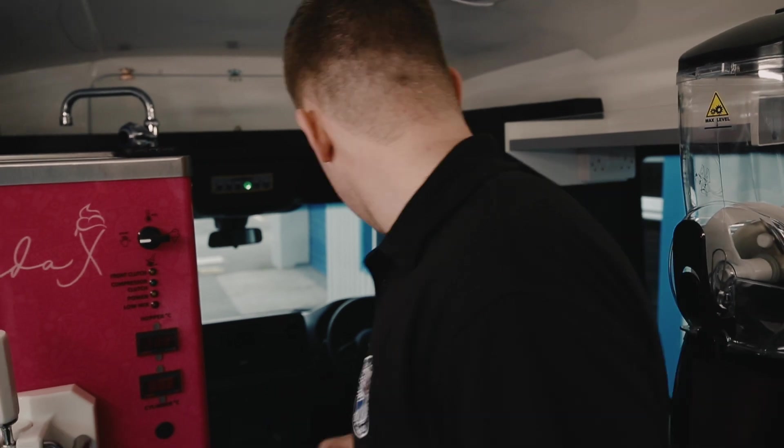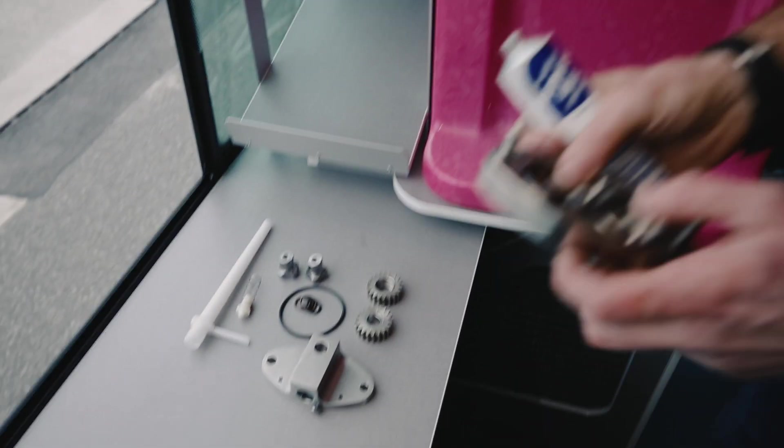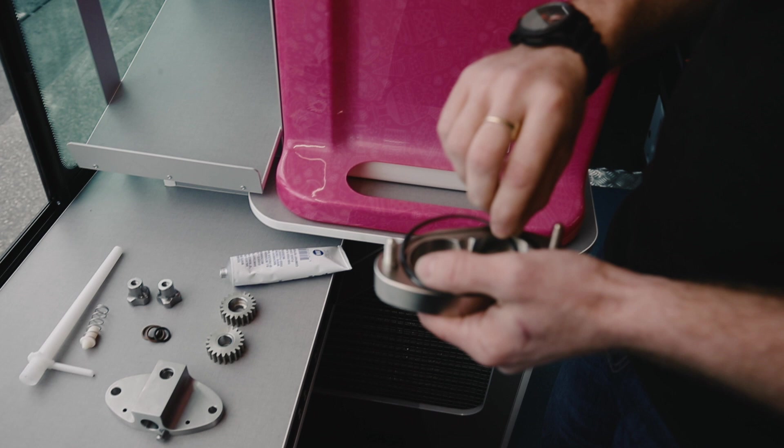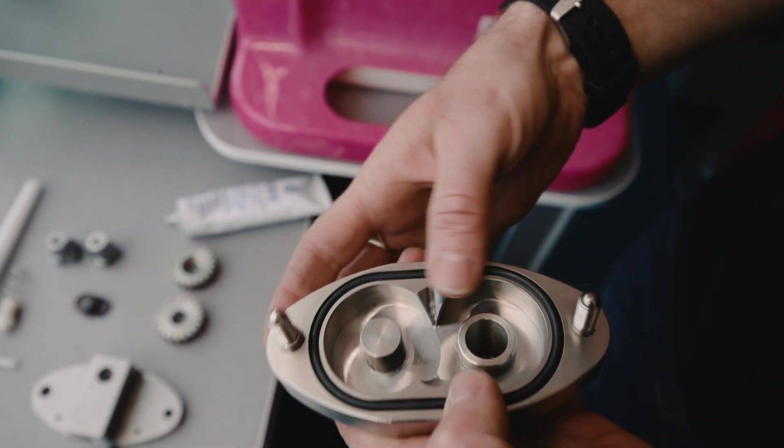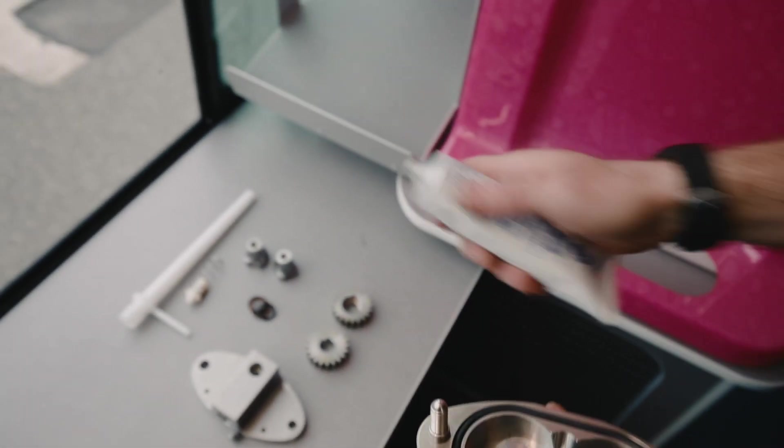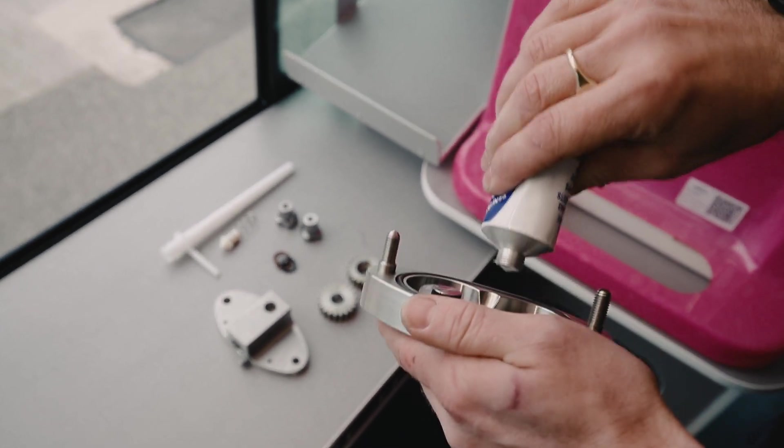So we'll assemble the pump. Main pump body - we'll put the seal on first. Pea-sized blob on there, pea-sized on there.